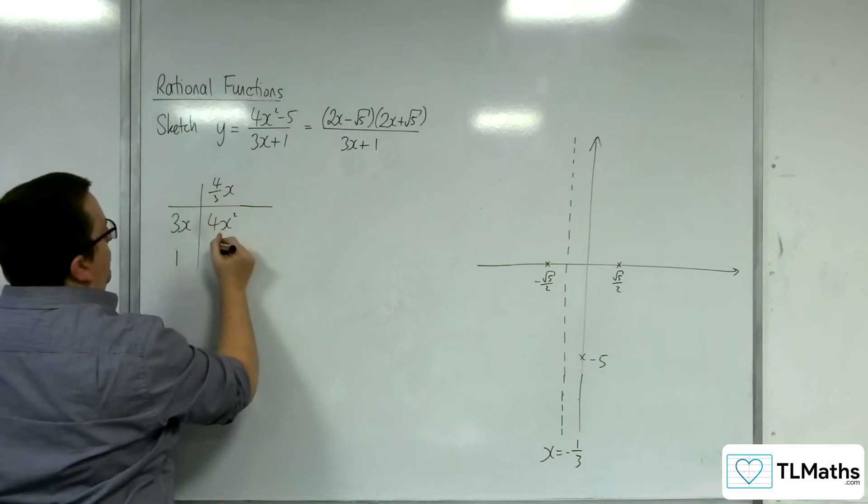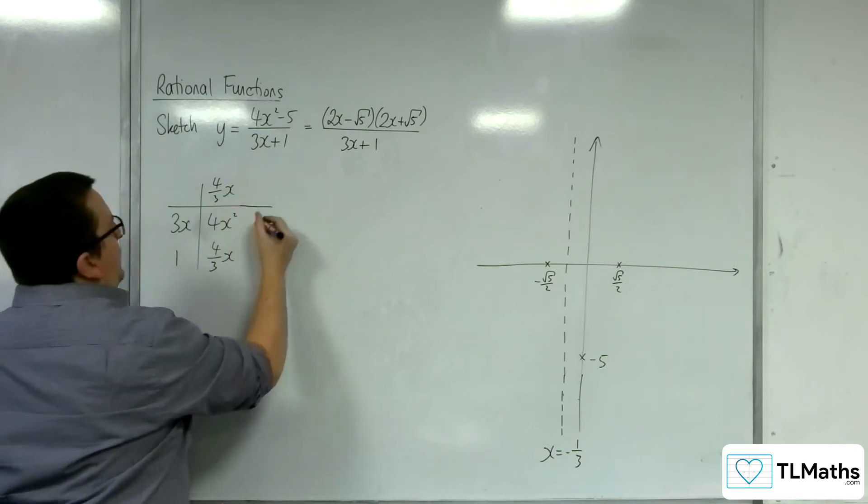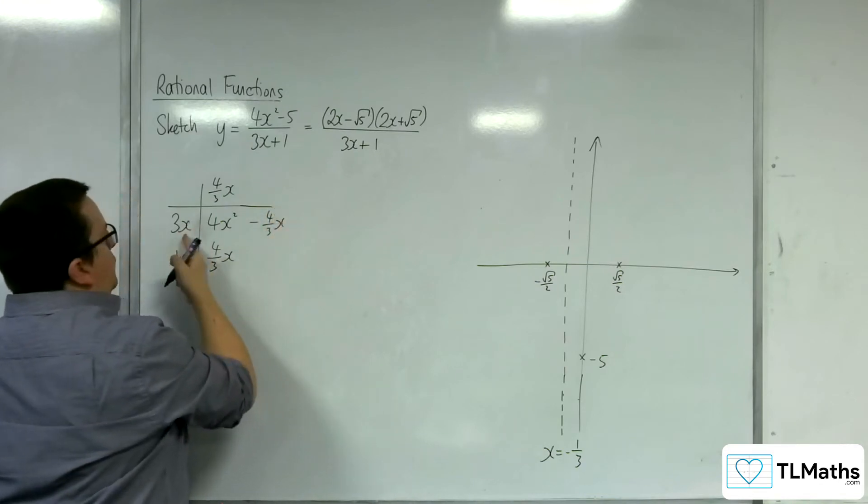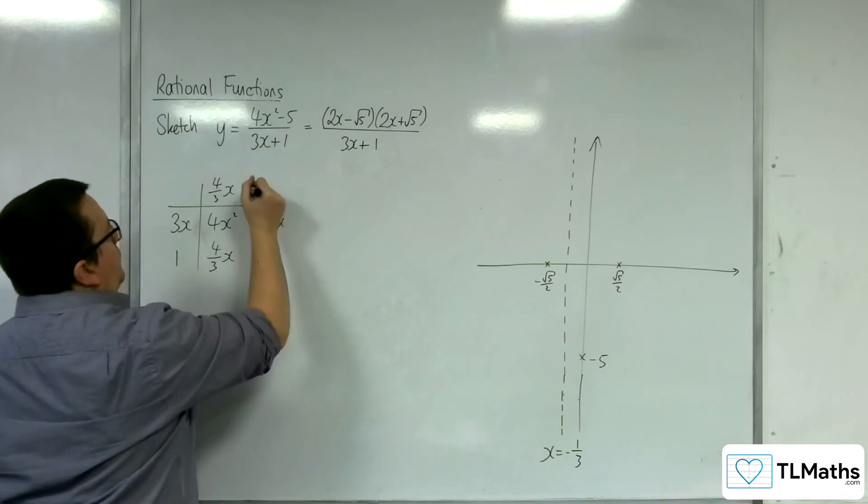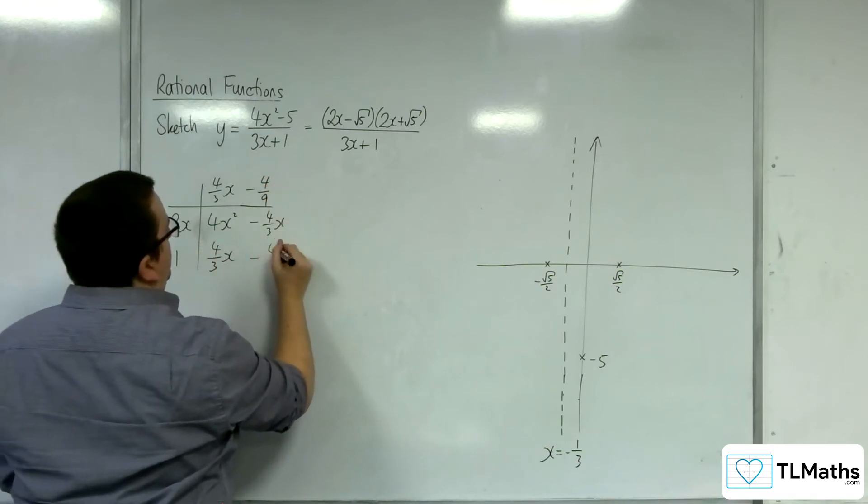4 thirds x times 1. Now we don't want any x's, so I'm going to have to take away 4 thirds x. 3x into minus 4 thirds x goes minus 4 ninths.